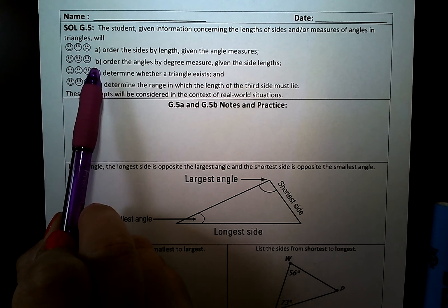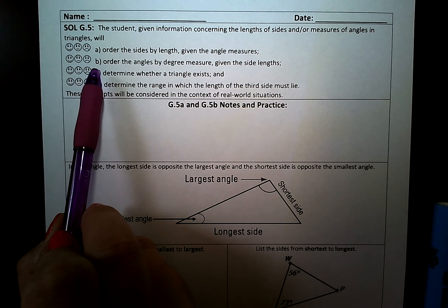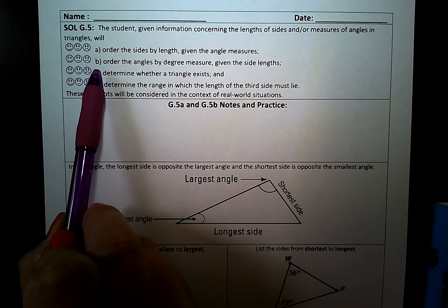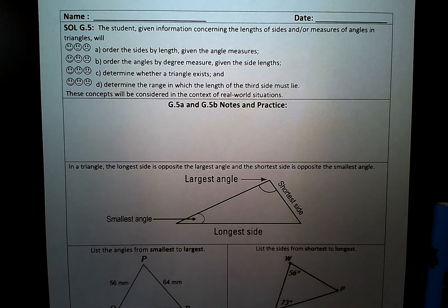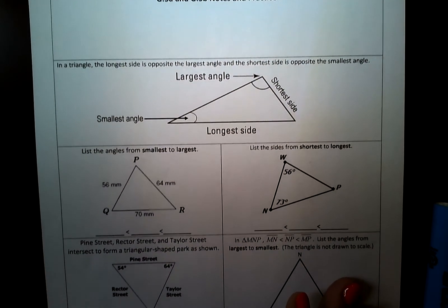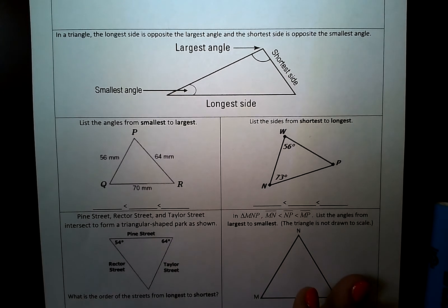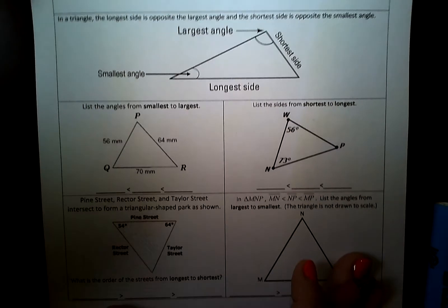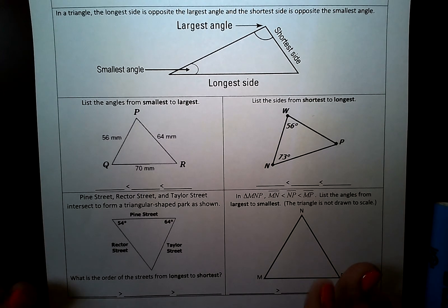Part A says that we need to order the sides by length when given the angle measures. And Part B says we need to order the angles by degree measure when given the side lengths. So here we're just putting the angles in order from least to greatest or greatest to least, or putting the sides in order from least to greatest or greatest to least. Let's go through a couple of practices of something that I think you'll remember very quickly.